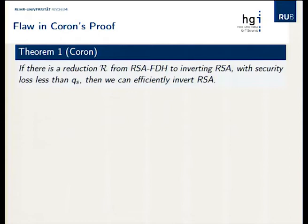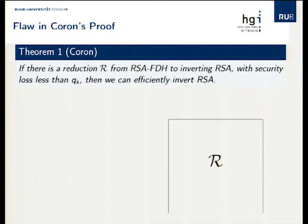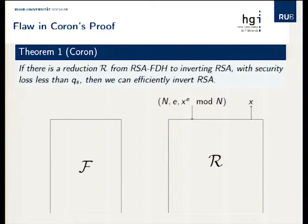Coron's theorem, stated very informally, is that if there's a reduction from RSA full domain hash to inverting RSA with a security loss less than Q_S, then we can efficiently invert RSA. So we have a reduction that gets an RSA instance and has to output a solution X. The reduction interacts with a forger F, simulates the UF-CMA game, and uses the forger to help invert RSA.